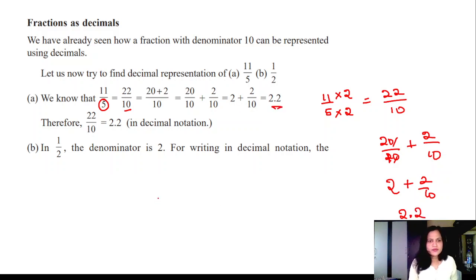Now half - the denominator is 2, right? In decimal notation, half is like this. 1 by 2, make this 10. 2 into 5 is 10, so multiply numerator also by 5 without changing the value of this half. Therefore 5 by 10. So in decimal form it is 0.5.